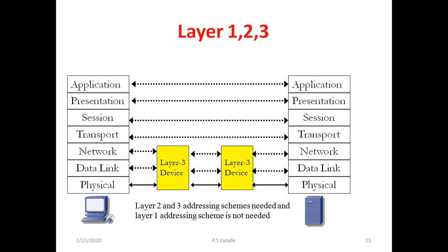Now we will study layers one, two, and three first, because those are the layers which literally handle data. You can see layer-three devices with physical, data link, and network layers. In these three layers there are intermediate stages, but layers four through seven communicate peer-to-peer, so there are no intermediate stages for those upper layers.